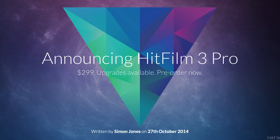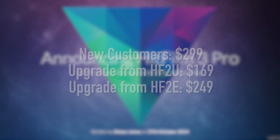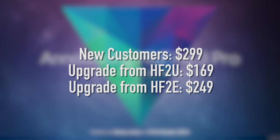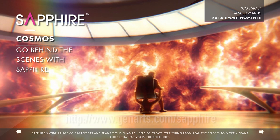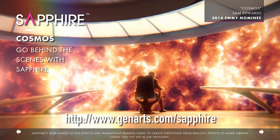First off, price. HitFilm 3 Pro will be available at the end of November for $299 for new customers, an upgrade from HitFilm 2 Ultimate for $169, and an upgrade from HitFilm 2 Express for $249. New customers who pre-order also get HitFilm 2 Ultimate for free to practice with before launch. In addition, anybody who pre-orders gets entered into a chance to win Gen Arts Sapphire 8, worth about $1700, which is a VFX package for industry-standard, powerfully customizable effects.